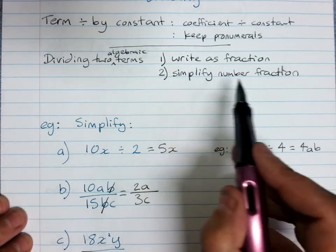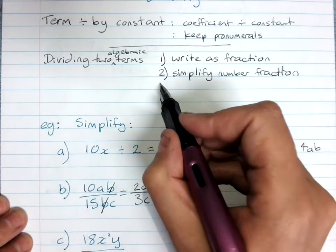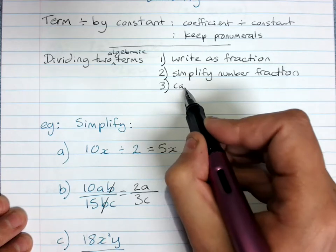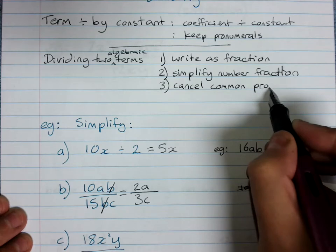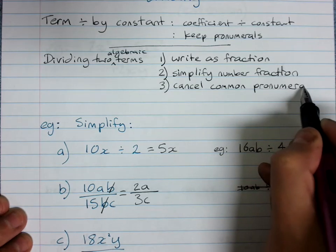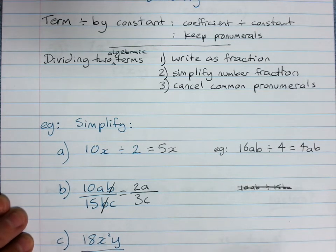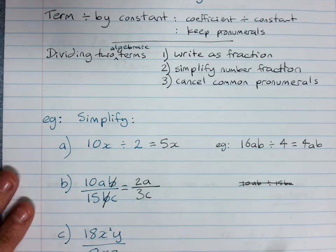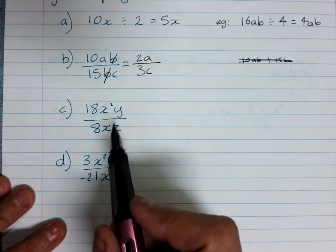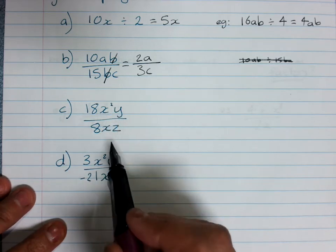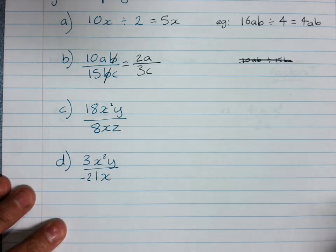So you simplify your number fraction and then cancel common pronumerals. There's a couple more examples here, and that's when we've got powers of pronumerals as well. So we'll start.